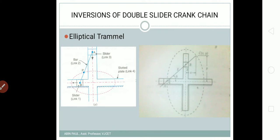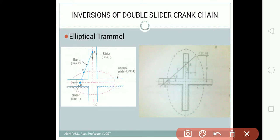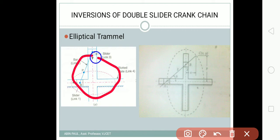This is the two-dimensional detailed diagram of the elliptical trammel that you have to draw for your examination. Here we have link number one, which is the first slider, then link number two which is the bar or connecting rod, then link number three which is the second slider, and we have the slotted plate — this slotted plate is the fixed link, named link number four. Along this slotted plate the slider will move.